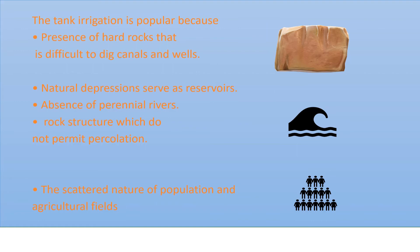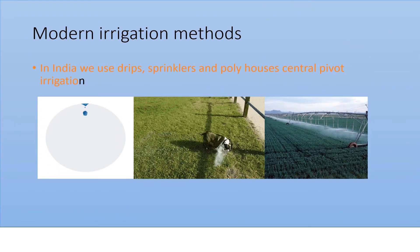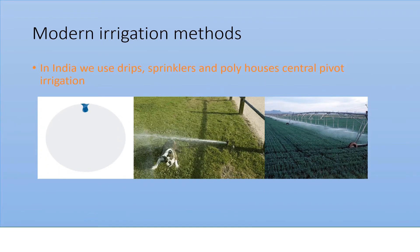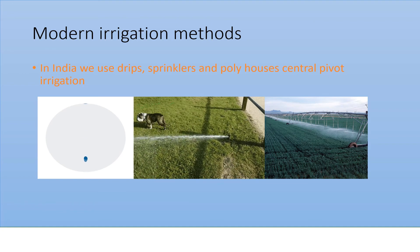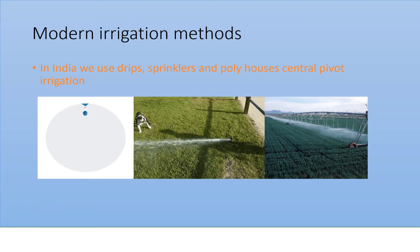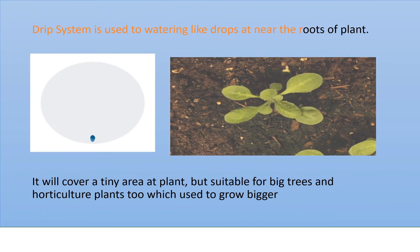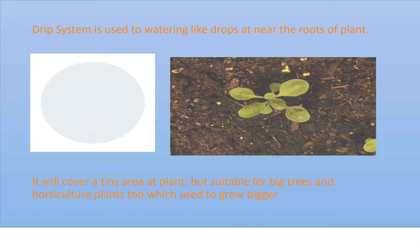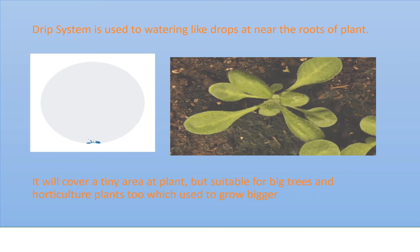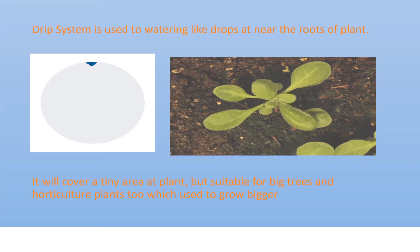In India, we use drip irrigation, sprinklers, polyhouse, and central pivot irrigation. Drip irrigation means water is supplied drop by drop near the roots of the plant using a tube. It covers a tiny area near the roots and is very suitable for big trees.